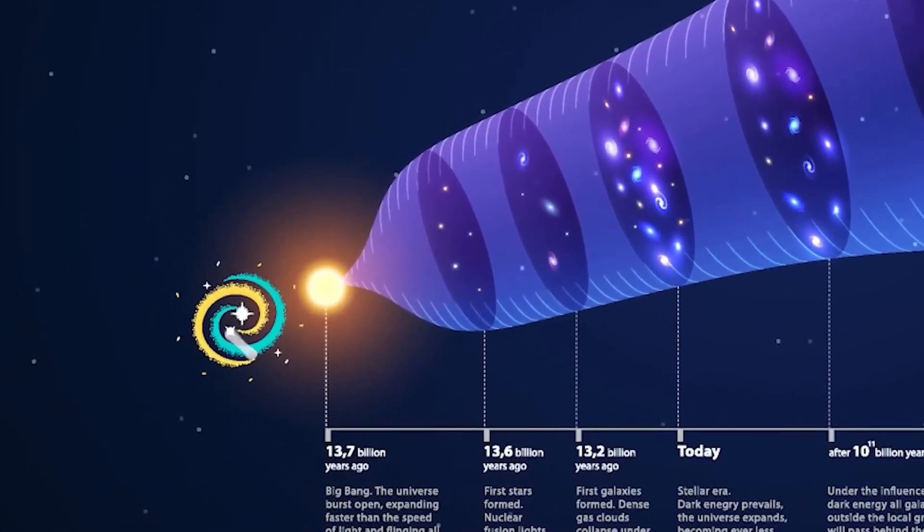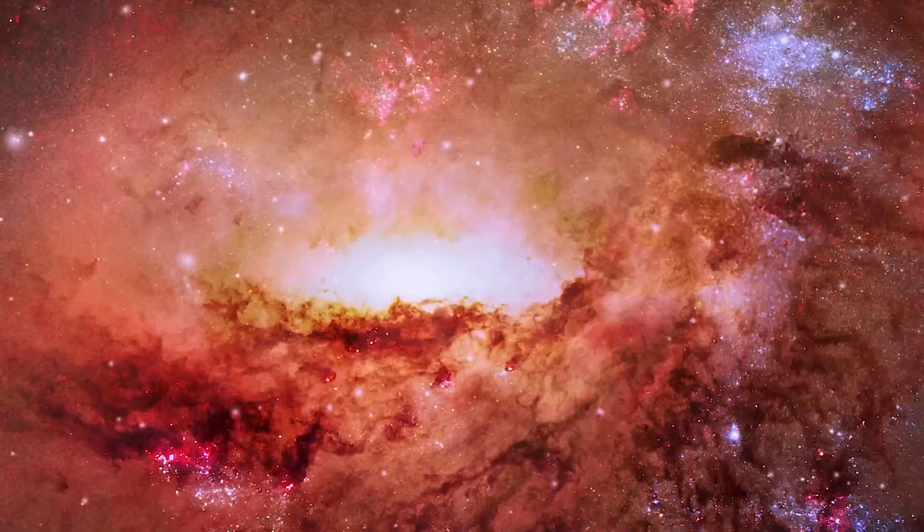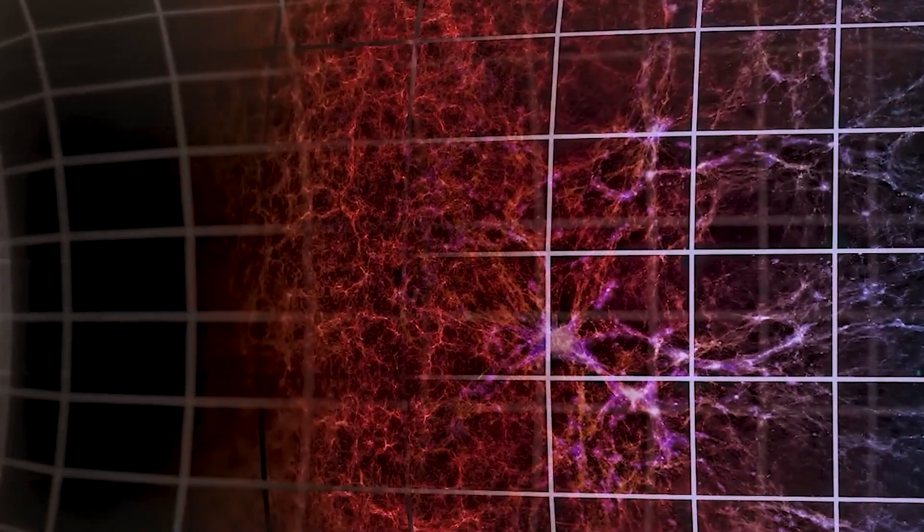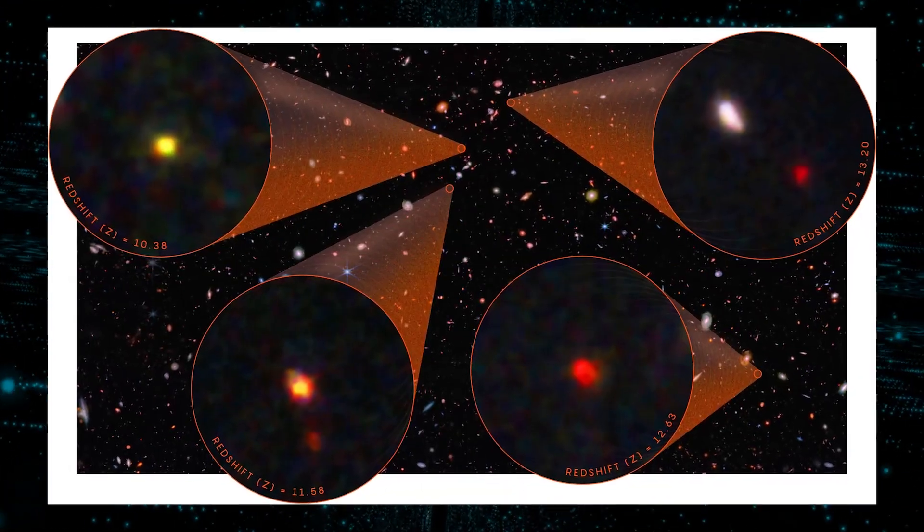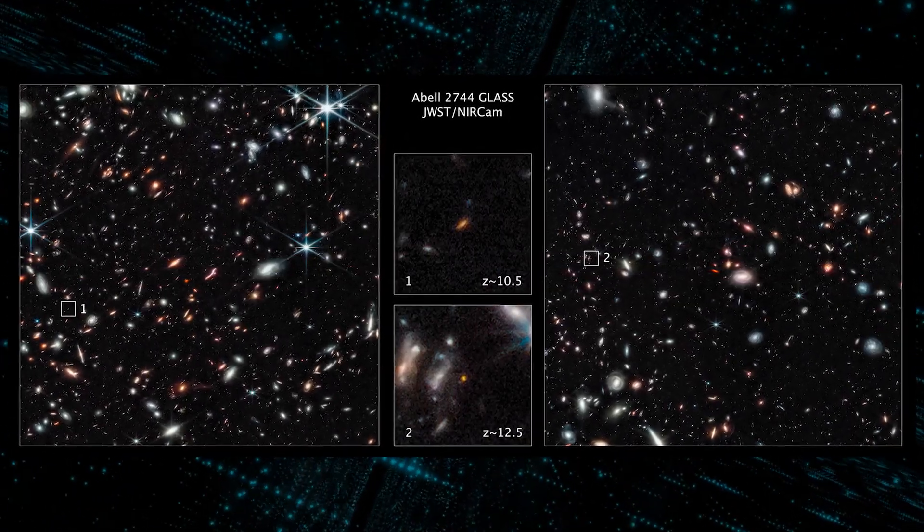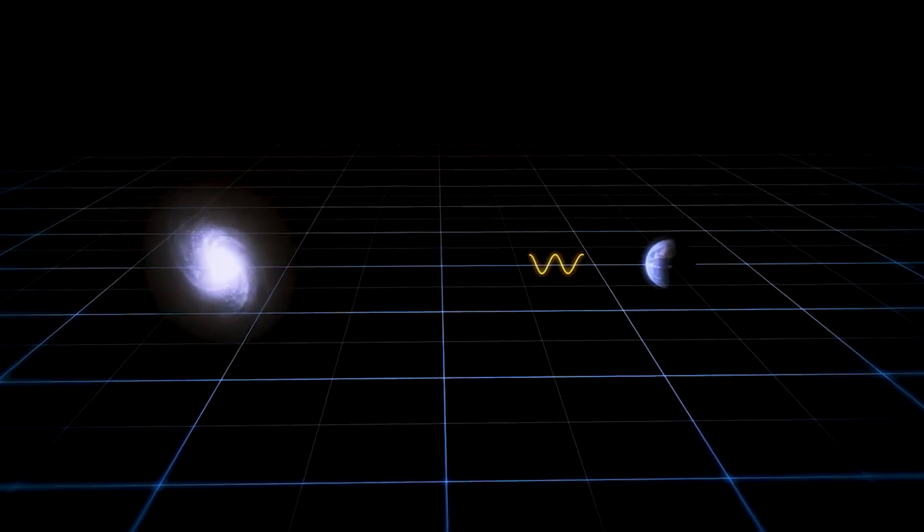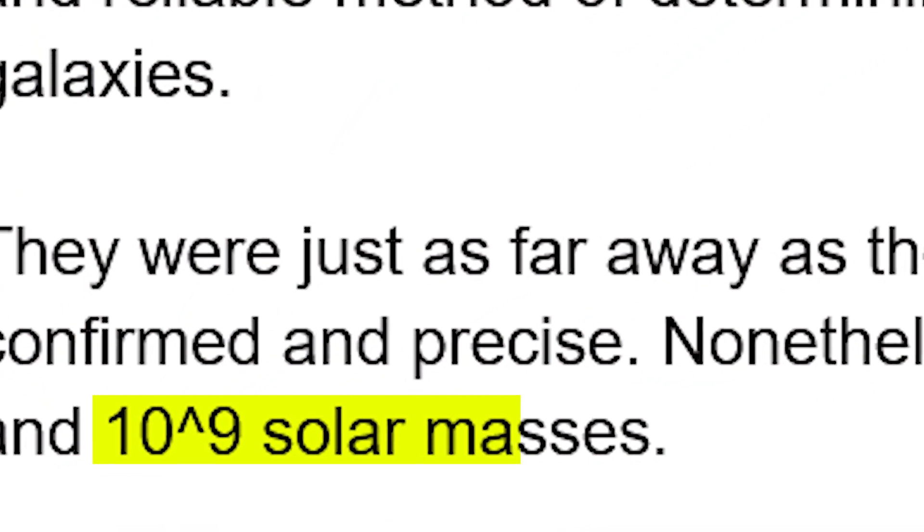It looked like the Big Bang theory was threatened by the masses of the galaxies in the early universe. So, a team of researchers used Webb to identify galaxies with a much more precise and reliable method of determining distance, and they found a sample of four galaxies. They were just as far away as the previously confirmed galaxies, but their distances were confirmed and precise. Nonetheless, the masses of these galaxies were only about 10 raised to the power of 8 and 10 raised to the power of 9 solar masses.